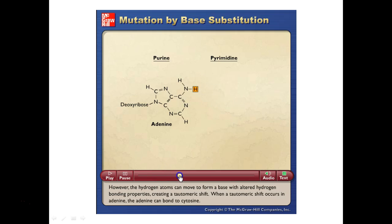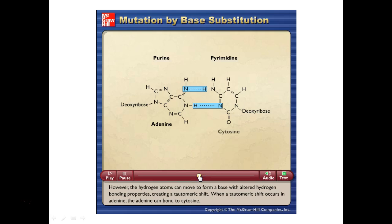Adenine can change in a particular way — notice the extra hydrogen bops over. When that happens it can bind to a different pyrimidine than it's supposed to. A is supposed to be with T, but here it's binding to C. This is a base substitution — we just swapped out one base for another. Instead of having T there, we have C. Did we just change the code? Yes. If this change stays, it could be passed on. But notice we still have three rings across structurally, so the structure is still fine.